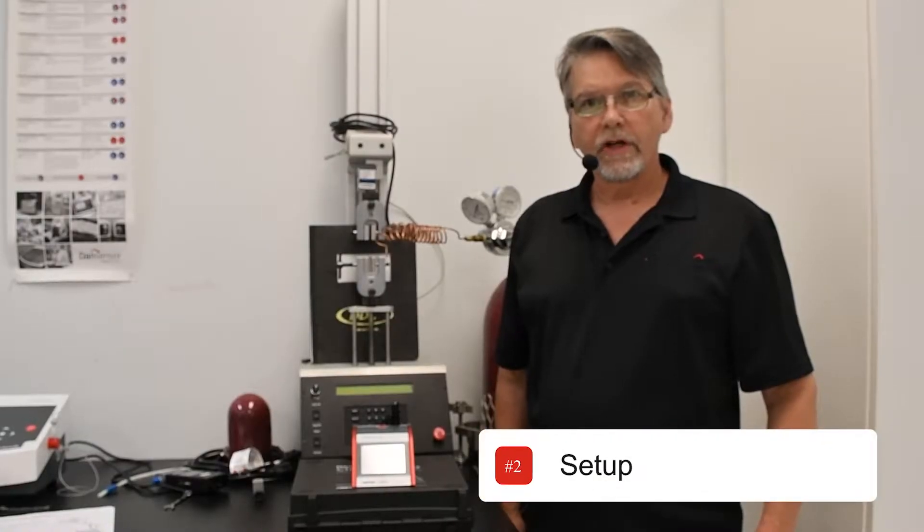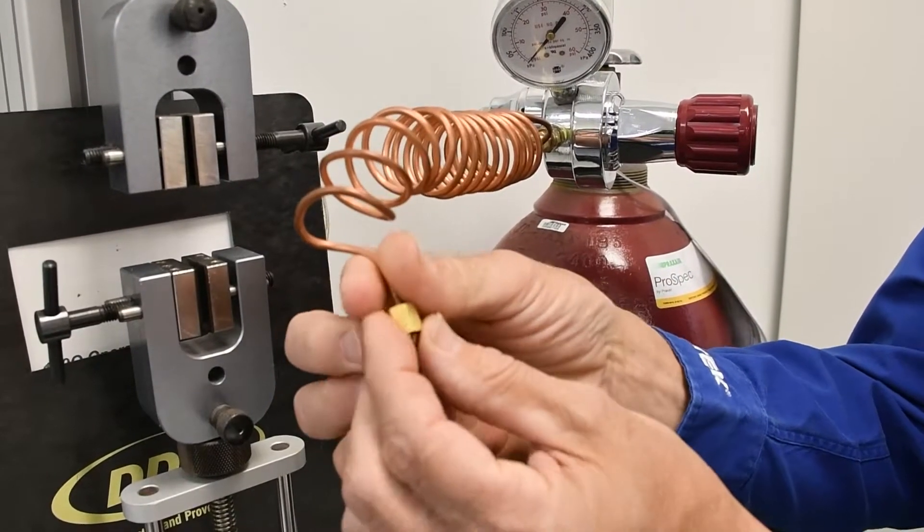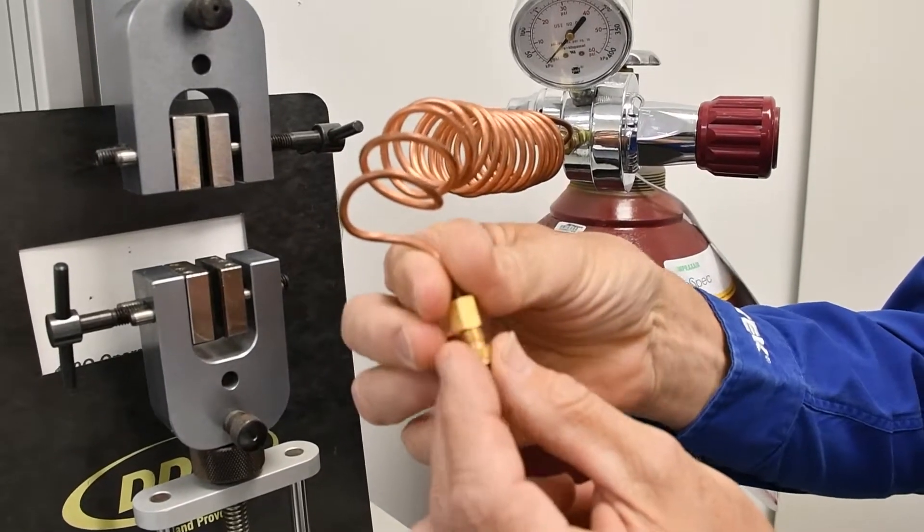Here's the setup for the Checkpoint 3. Connect the gas tank regulator to the pressure relief kit via nut, ferrule and copper tubing.